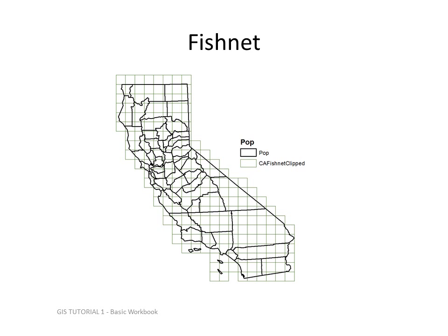Here's an example of a fishnet map, which you'll be doing in your lab, where you basically aggregate data estimated based on a grid overlaid on top of the population. The benefit of this is that it may give you a good summary of data over space.